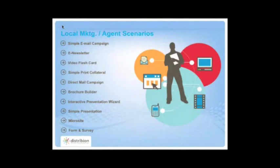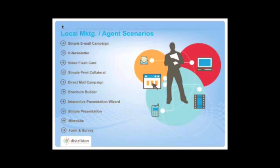So let's talk about the local marketing and agent scenarios. What I'm going to talk to you about today is specifically microsites — I'll show you a quick example — but most importantly what's happening with socialization at a high level, so we're going to focus more on that today. At the simplest level, we can provide email campaigns, e-newsletters, video flashcards, simple print collateral, direct mail campaigns, brochure building, sales kit generators, interactive wizard-based presentations, simple presentations, microsites, and forms and surveys. And what everybody has to understand is all of this is based in one consolidated platform.